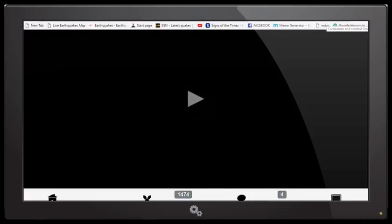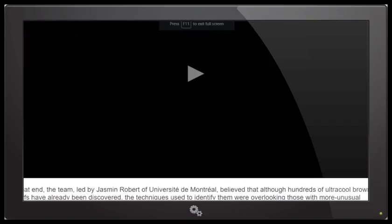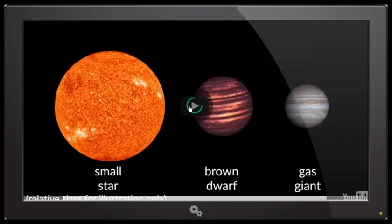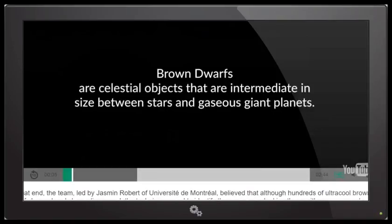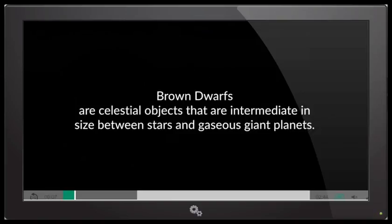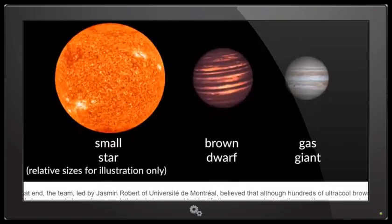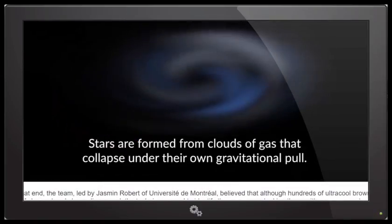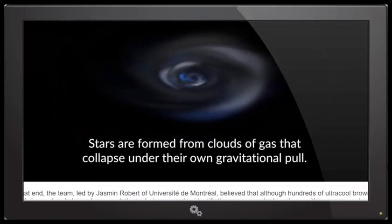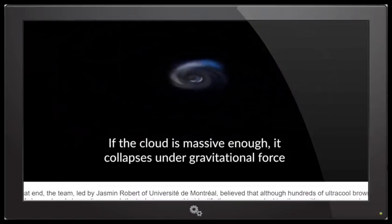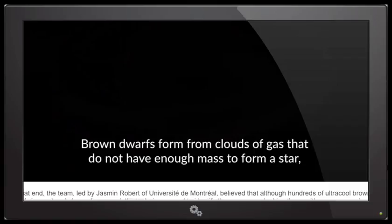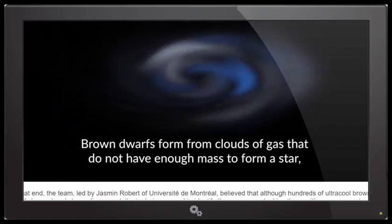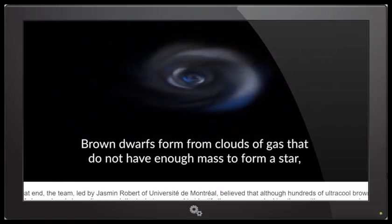Now, what you're about to see, I'm going to go ahead and bring this to full screen. What you're about to see is what they've put together. So let's take a look at it. It's showing you the relative size of the sun, a star, the brown dwarfs. Stars are formed from clouds of gas that collapse. If the cloud is massive enough, it collapses under gravitational force until the core density and temperature are high enough to trigger hydrogen fusion. Brown dwarfs form from gas clouds, and so on.